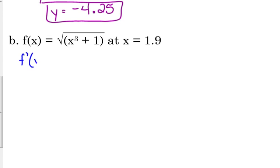We've got to take the derivative. f prime of x. That would be 1 half times x cubed plus 1 to the negative 1 half times, we've got to do the chain rule, 3x squared. There's not really a simplifying that we can do here, so I'm just going to leave that be for a second. If we try to approximate this at 1.9, what x value do you think we should choose here? 2.